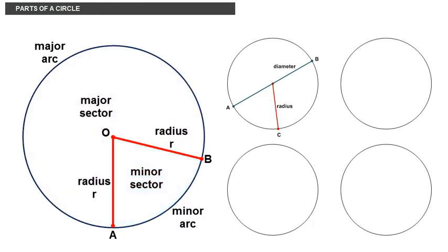The larger sector, called the major sector, is bound by the radii and the major arc AB. The smaller sector, called the minor sector, is bound by the same two radii and the minor arc AB.